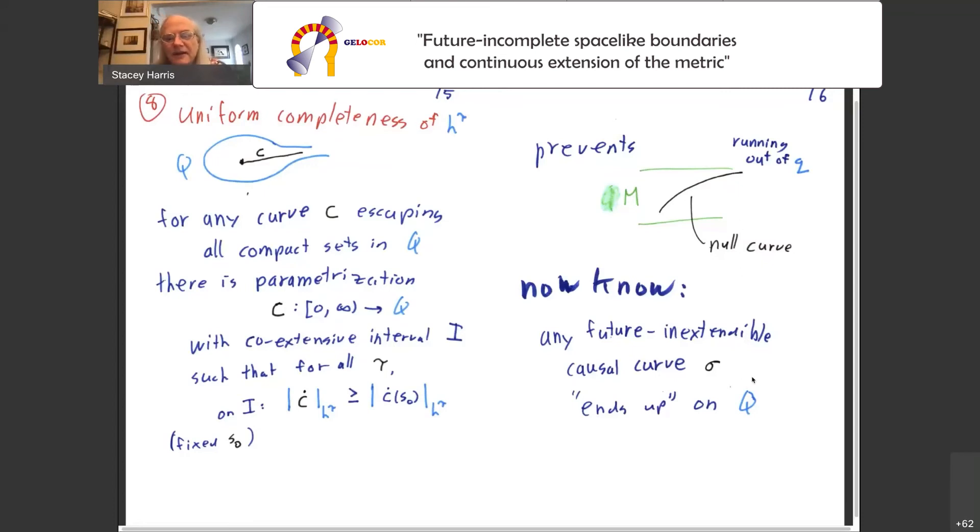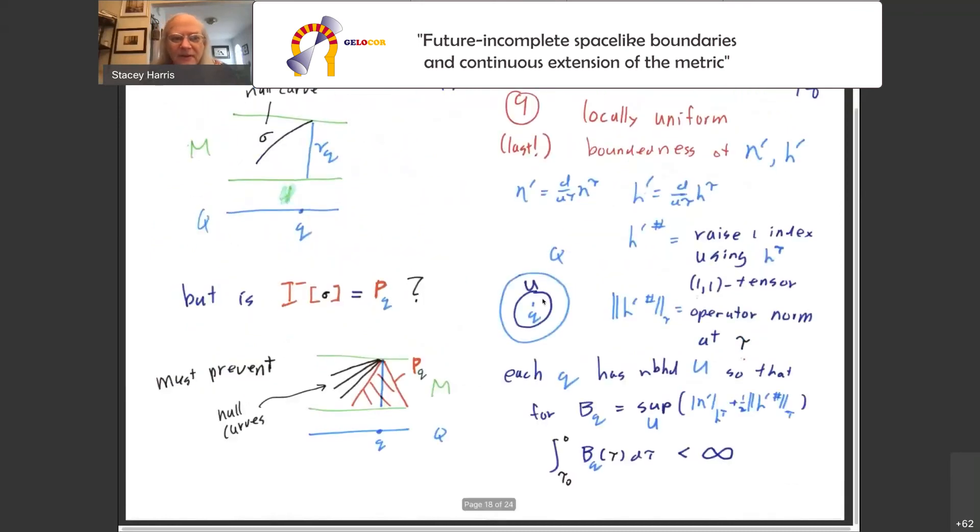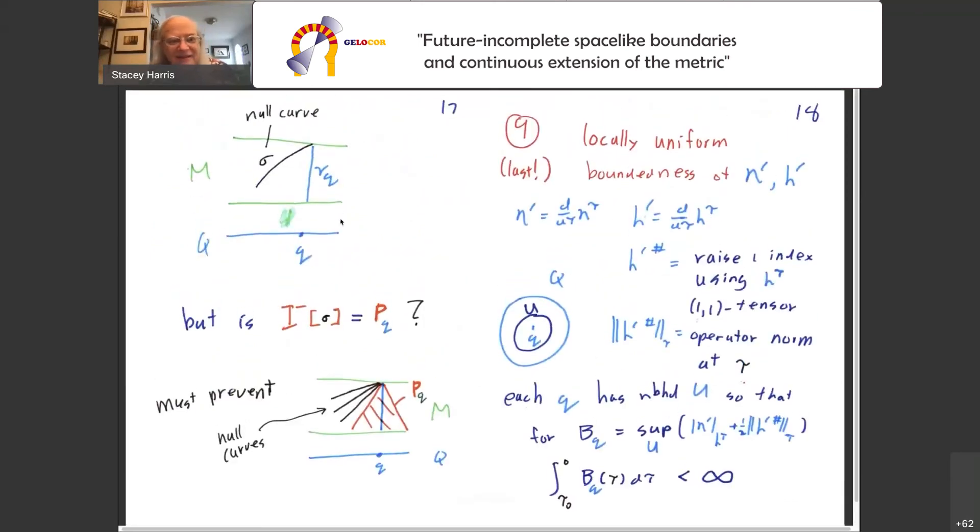Once we know that, then we rule out the following problem. What I do not want is for an inextendable null curve to be inextendable because it runs out of Q. This uniform completeness prevents that happening. So what we now know with all these assumptions is that any future inextendable causal curve sigma actually ends up somewhere on Q. But that's not quite what we need yet. What we need is, and furthermore, the past of sigma has got to actually be equal to one of these p sub q's. That is to say, equal to the past of the foliate that goes with q. In other words, we have to prevent this kind of situation.